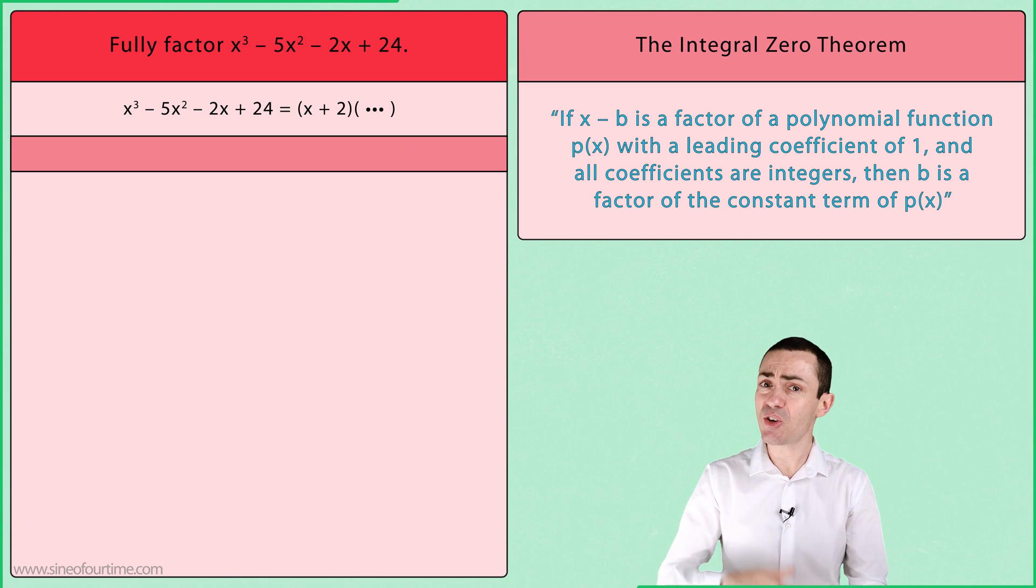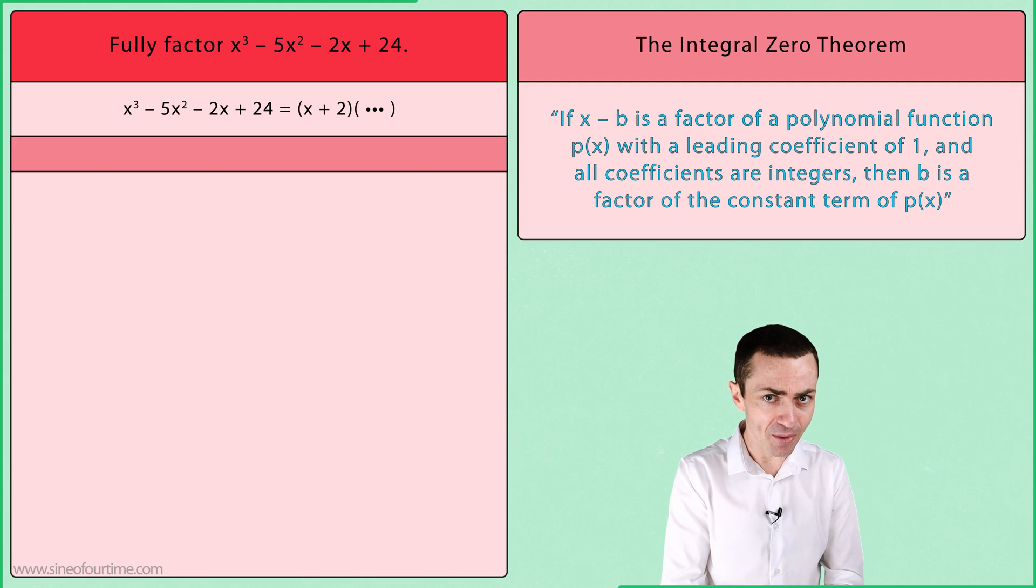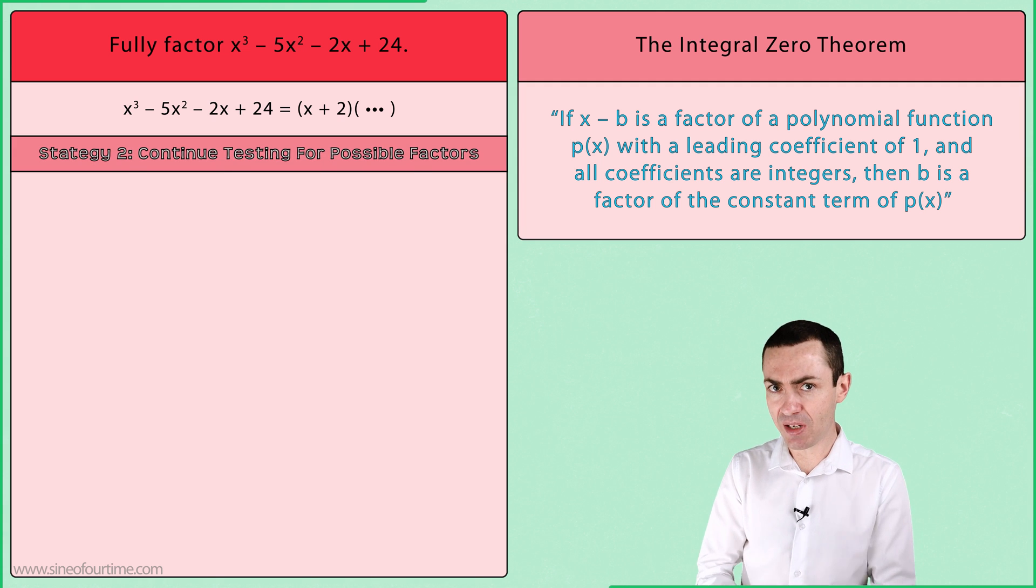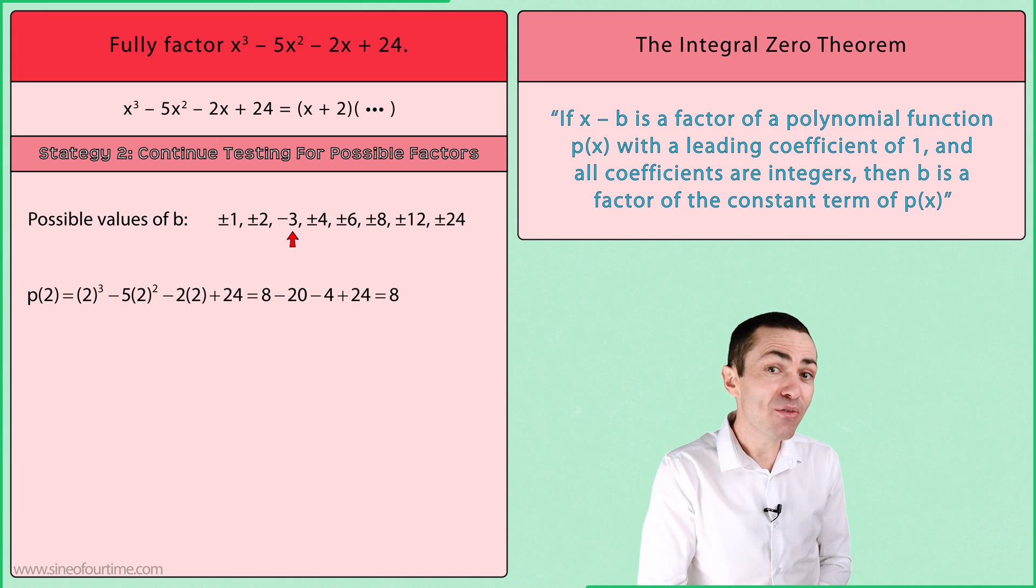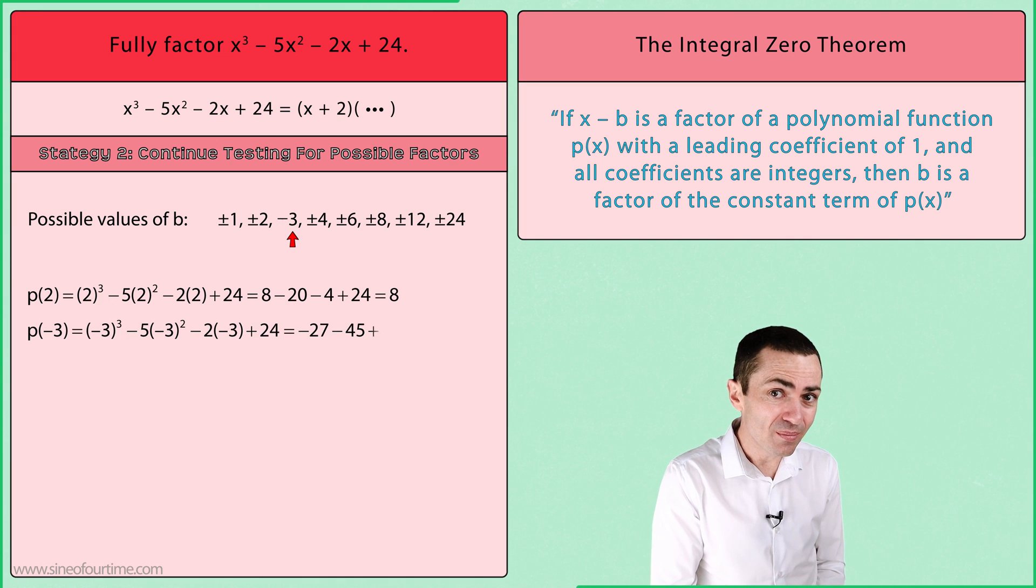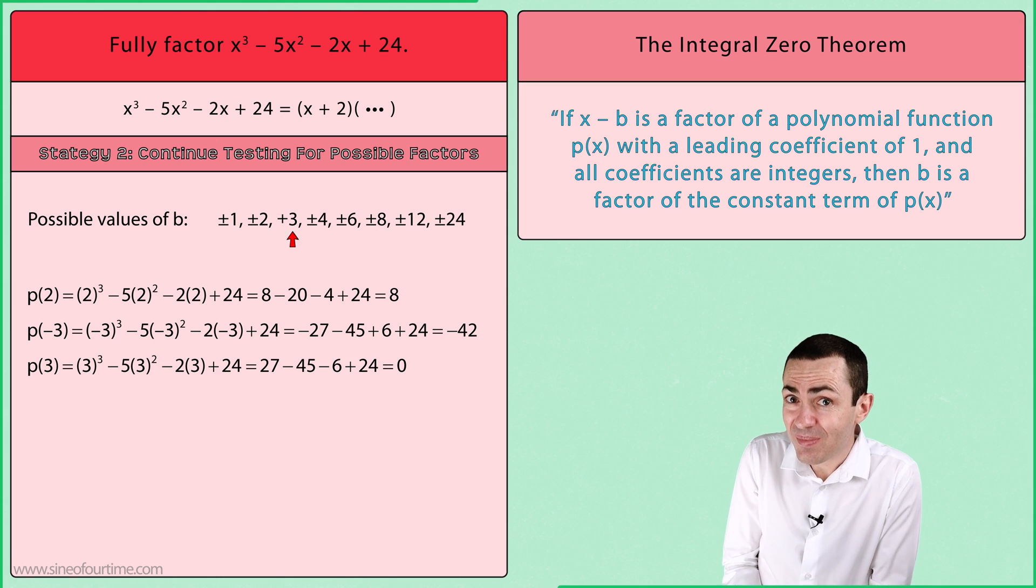The second strategy is just to continue testing possible values of b using the factor theorem. So we'll continue from where we left off. p(2)? No luck. p(-3)? No luck. p(3)? Yes!